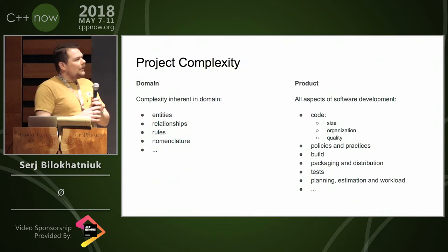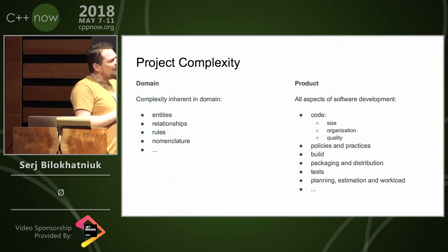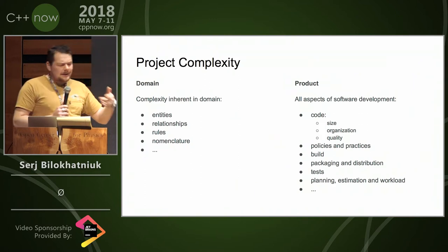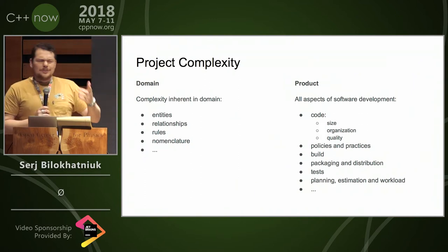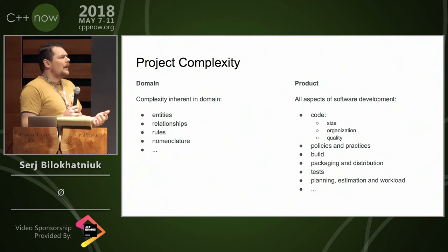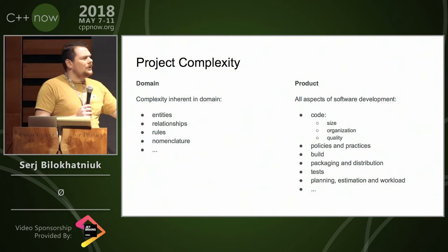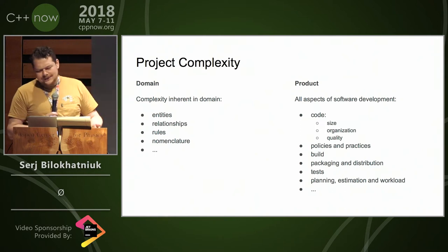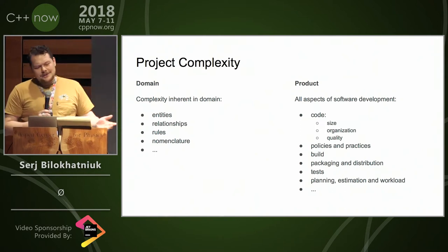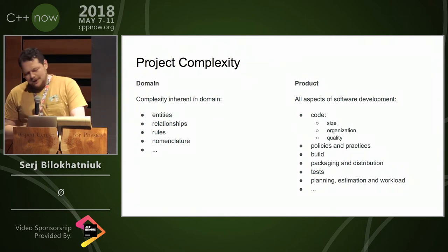But then I start thinking about this thing I call generally code complexity. I think it stems from two things: there is the domain and there's the product itself. In the domain it's the entities, relationships, the rules, nomenclature — whatever it is we're dealing with in our domain. And then there is the product itself, and that's everything that we do as engineers: it's the code, it's quality, it's size, how we build, how we review, how we commit, how we package, distribute, test, plan — everything.